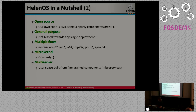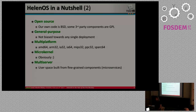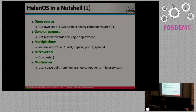Multi-platform: we currently support seven hardware architectures. You might remember from last year that I said eight — nowadays it's seven, because we removed the SPARC V8, the 32-bit SPARC variant. We lost access to this special kind of hardware, used mostly in the space domain, and the emulators are very hard to get without paying $1,000 a year. To lower our maintenance burden we removed this architecture, but it might come back later.